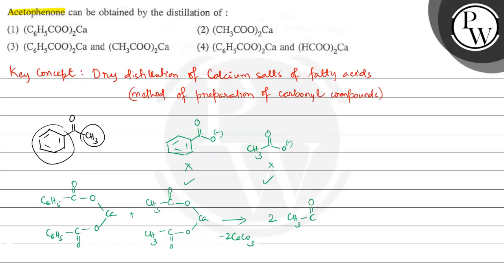So third option is the correct answer. Let's talk about the fourth option. In the fourth option we have C6H5COO minus and HCOO minus. So here we have two ions: first we have C6H5COO minus benzoate ion and formate ion.